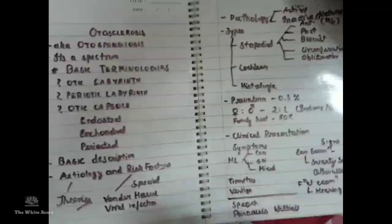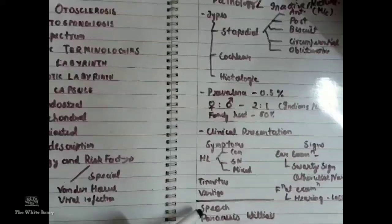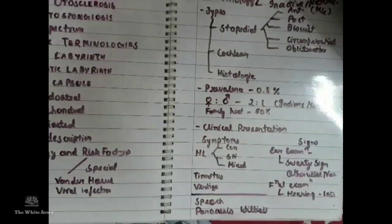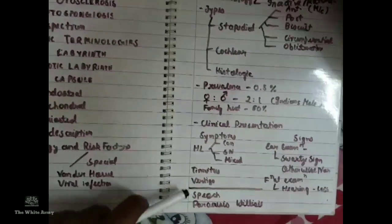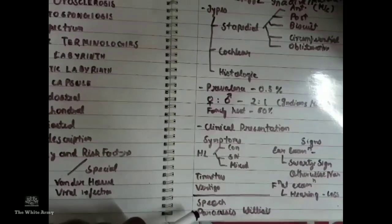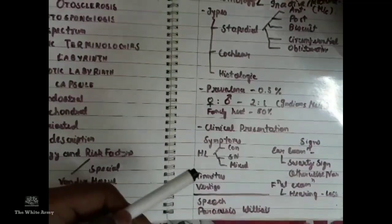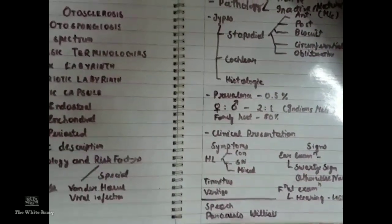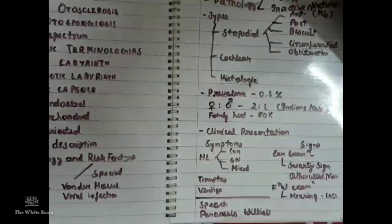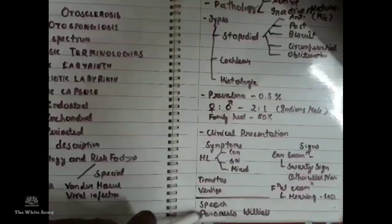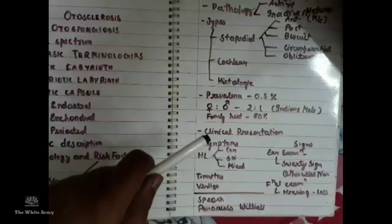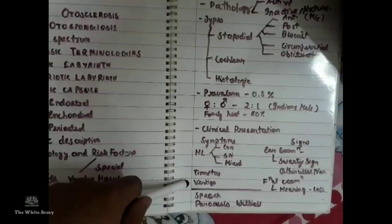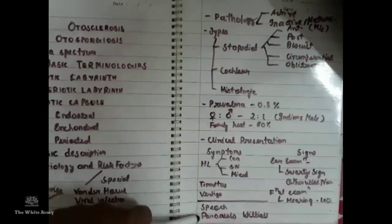Two special symptoms are seen in otosclerosis: a change in speech — the patient will have a monotonous, well-modulated, soft speech — and paracusis Willisii, meaning the patient hears more accurately in a noisy environment because the person they are speaking with will raise their voice to be heard. Summarizing: the most important symptom is hearing loss (conductive, sensorineural, or mixed), tinnitus, vertigo, soft speech, and paracusis Willisii.